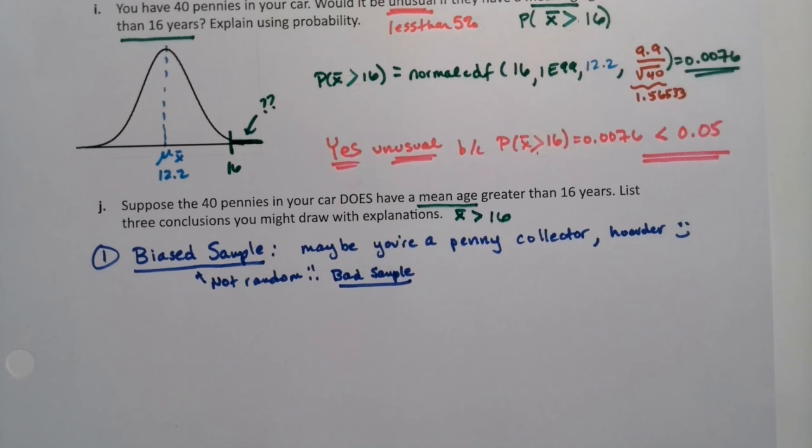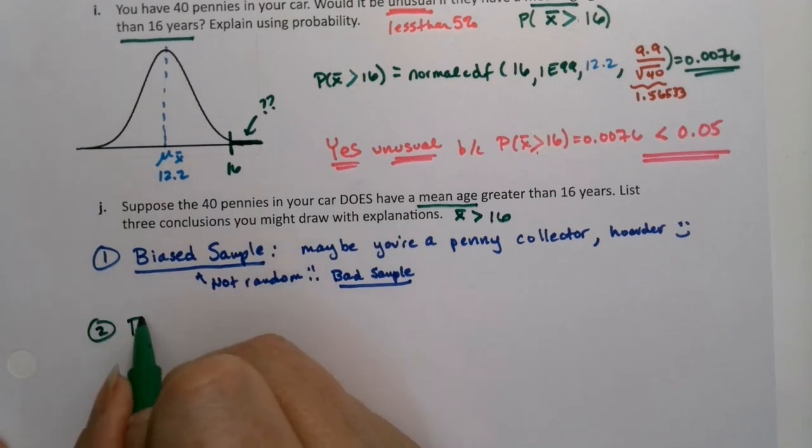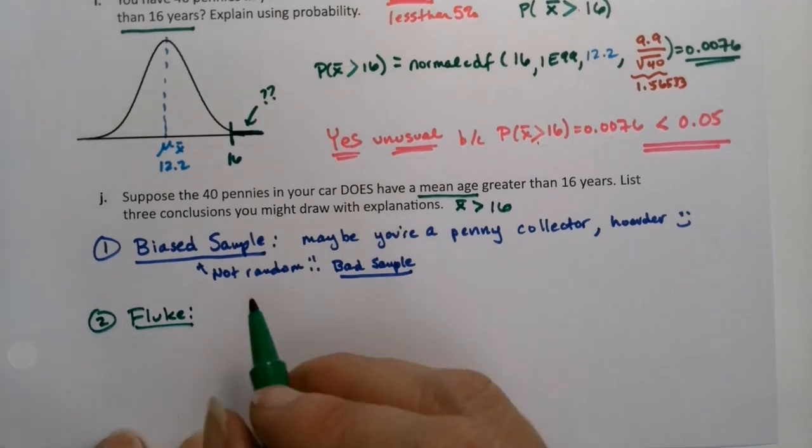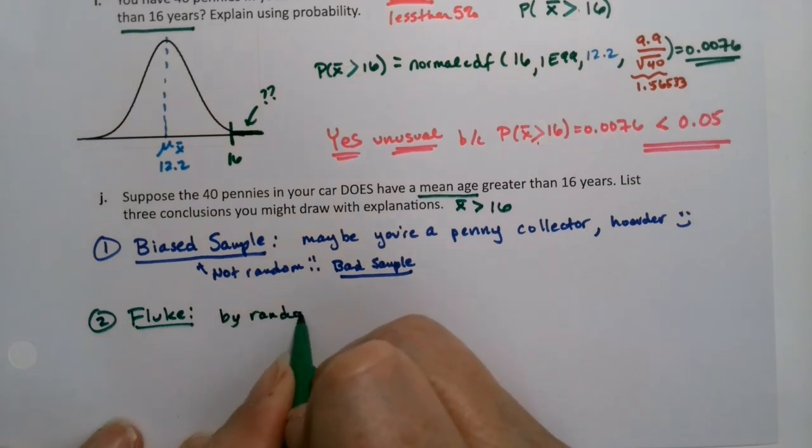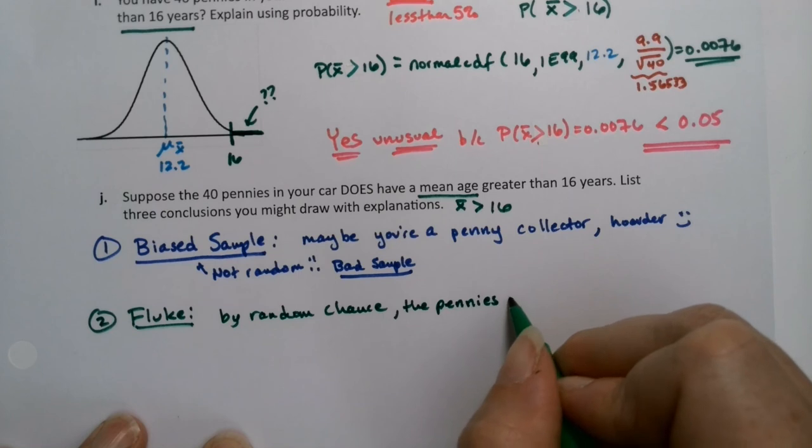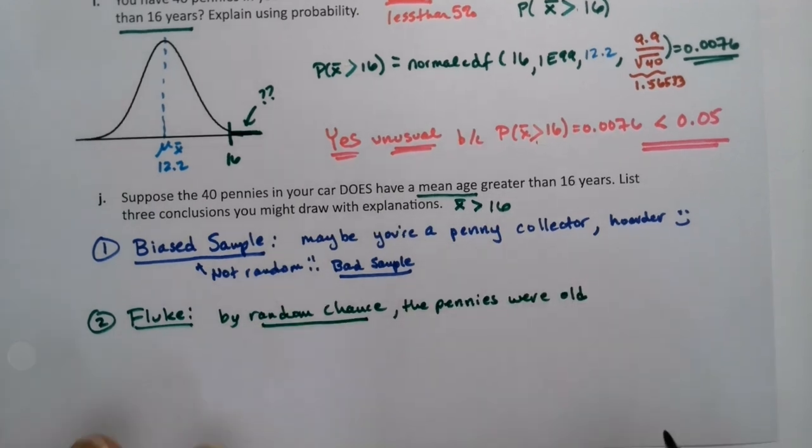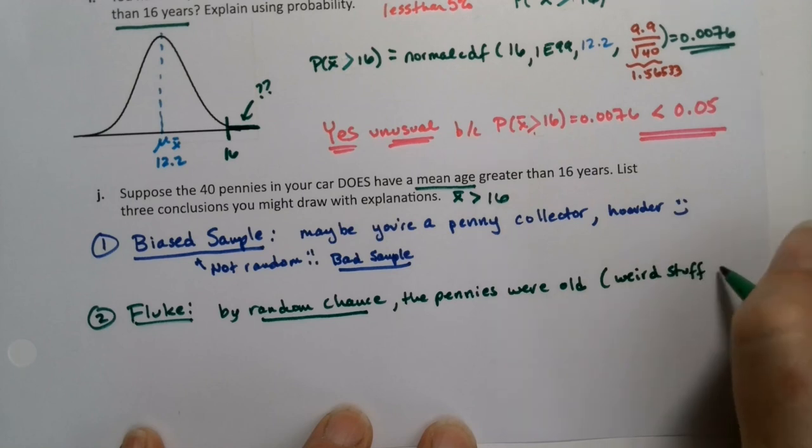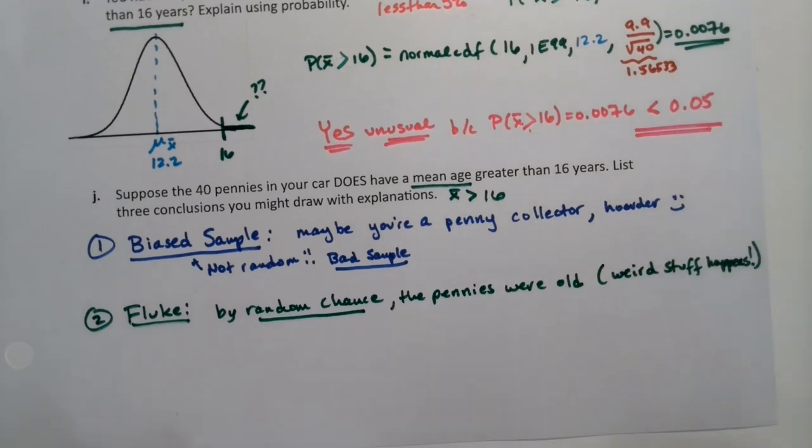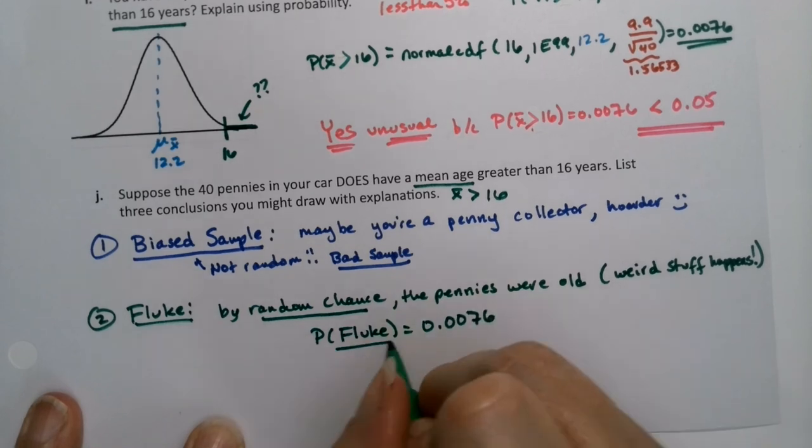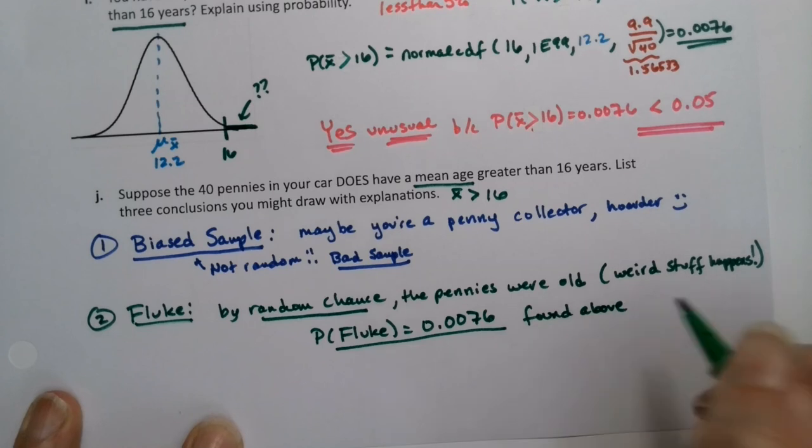Okay, what's another issue that could be happening? What's another conclusion we could draw? Well, another thing could just be it happens, right? Weird stuff happens all the time. So number two is called a fluke. It's just a weird sample. It's not a bad sample necessarily, it just, things happen. By random chance, the pennies were just old. And that's the key, it's random chance. So it is random but a fluke, weird things happen. Now the probability of that fluke is what we found above. That's the .0076 found above.